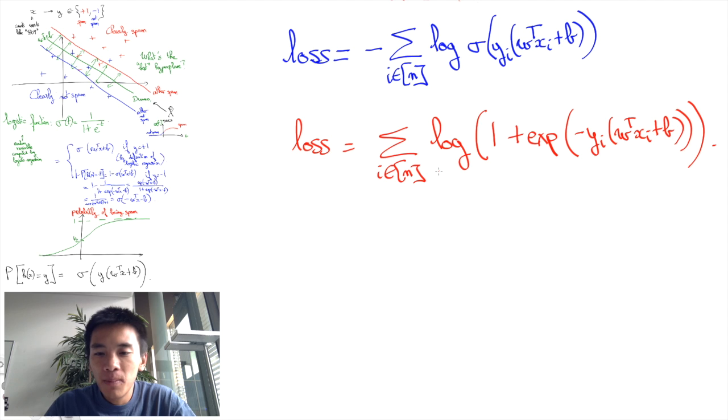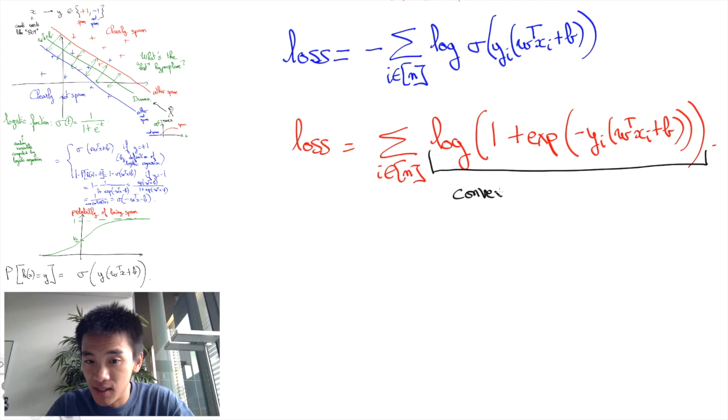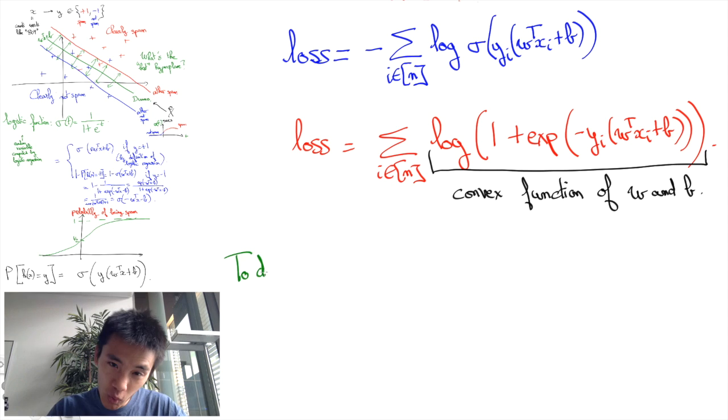But perhaps even more importantly, using the logarithm makes this loss function convex. So that determining a best logistic regression now boils down to minimizing a convex function.